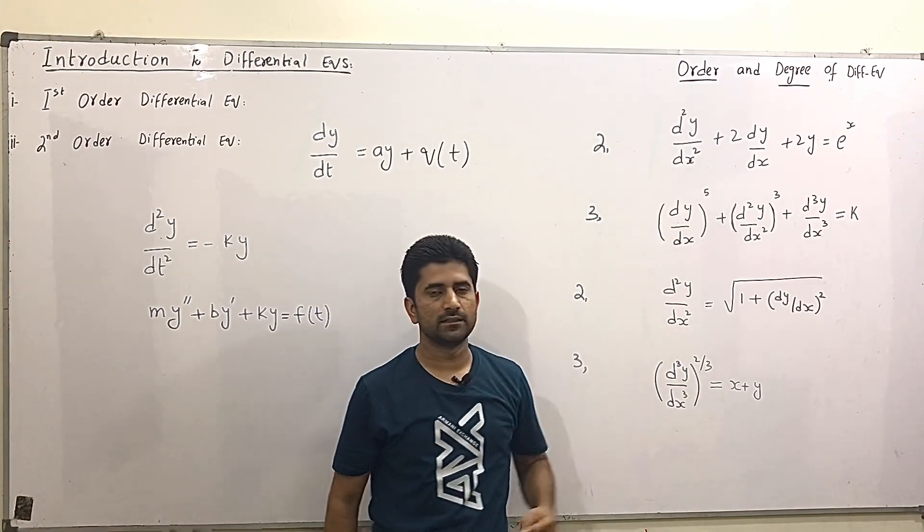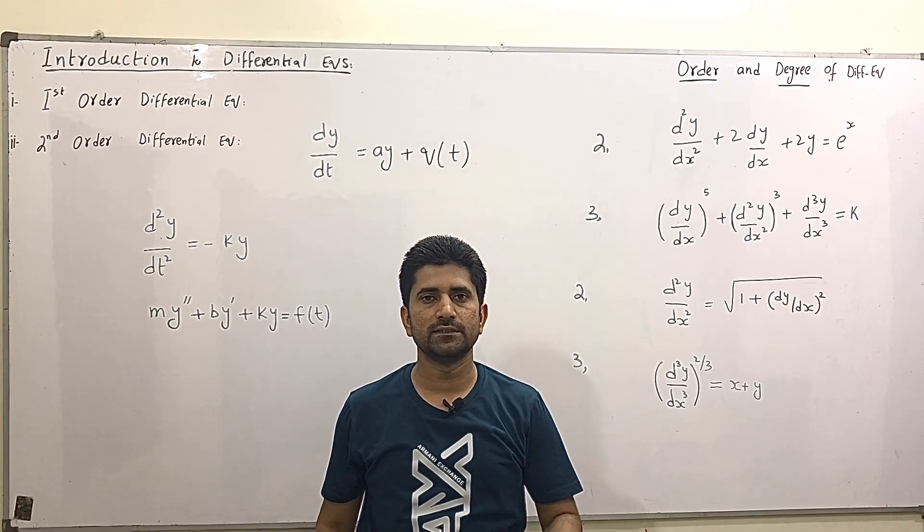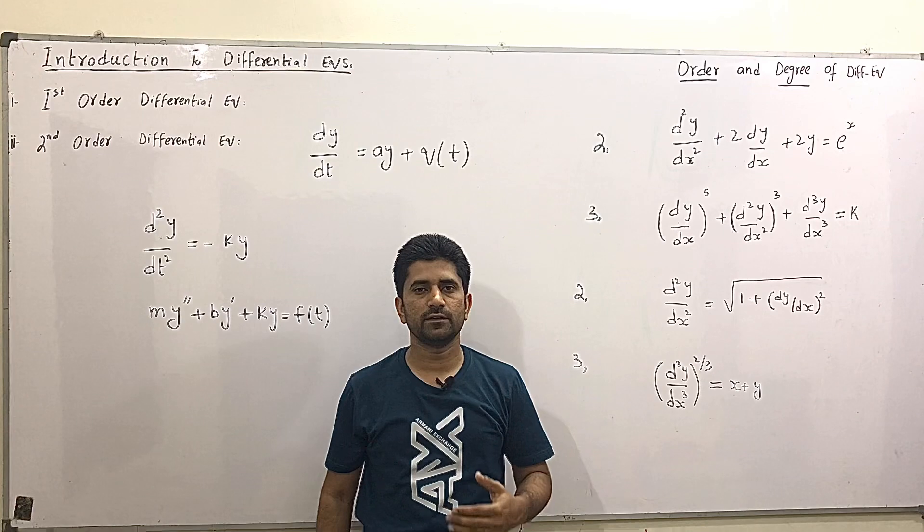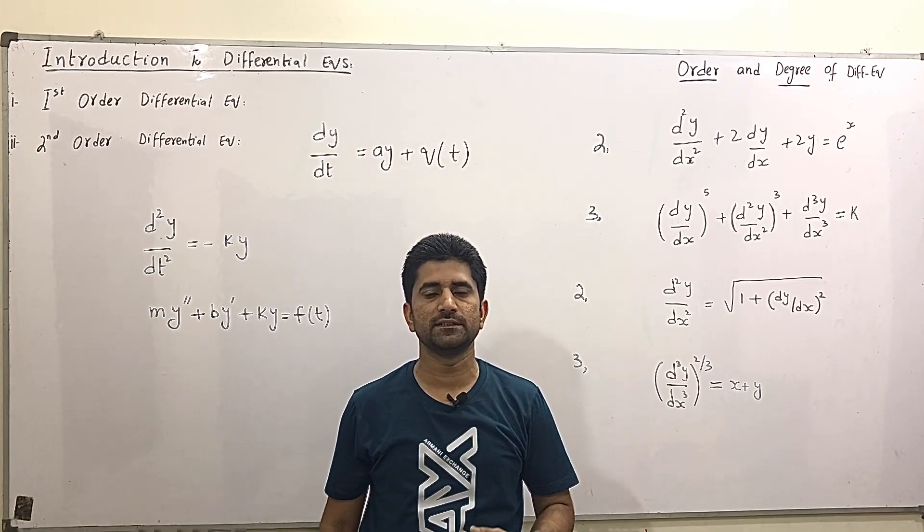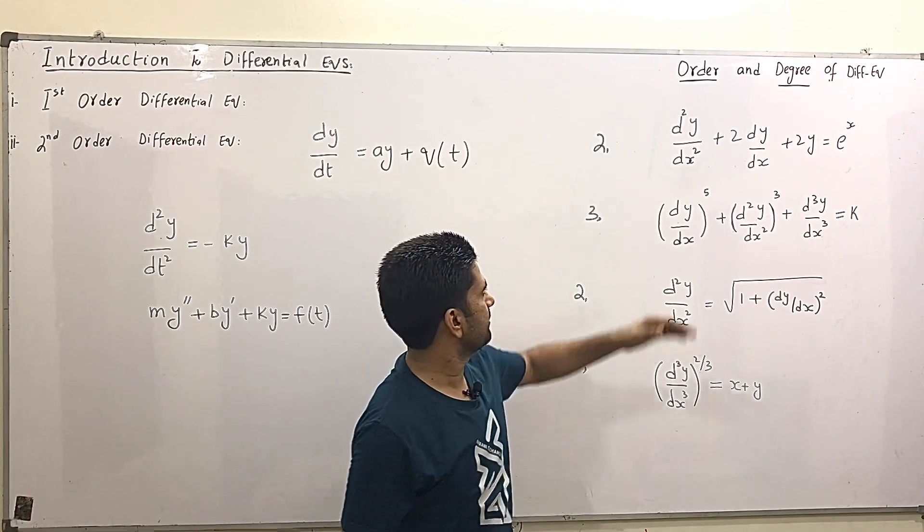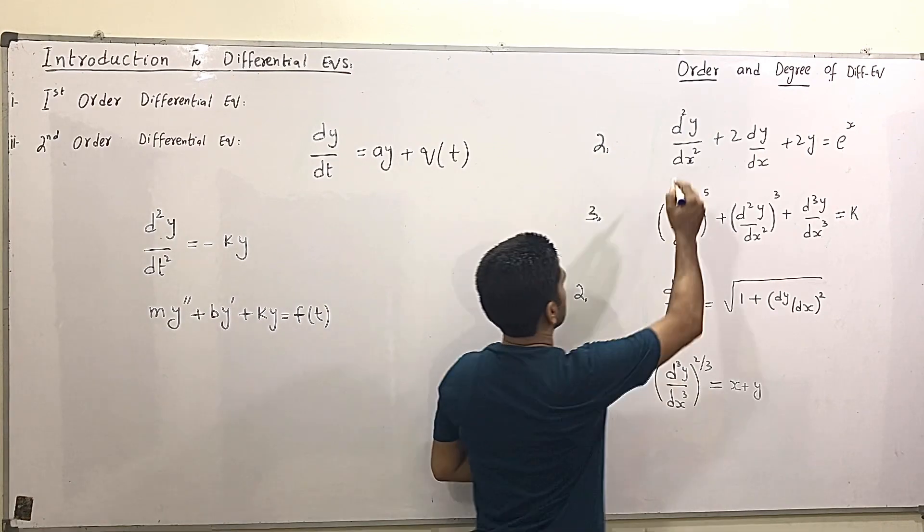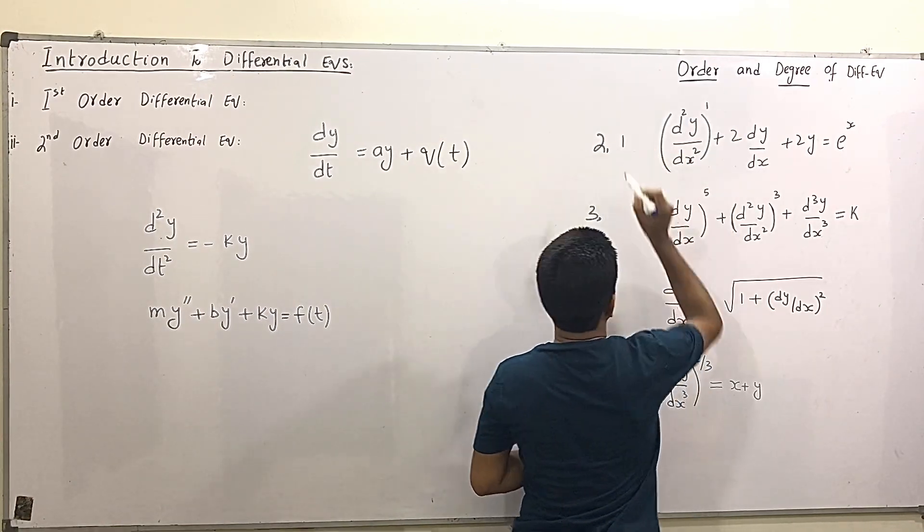Now next is degree. When we talk about degree we mean the degree of the highest derivative present in the differential equation after removing radical sign and no term of derivative present in the denominator. For example in this the highest derivative is here and its degree is 1. So degree of this is 1.